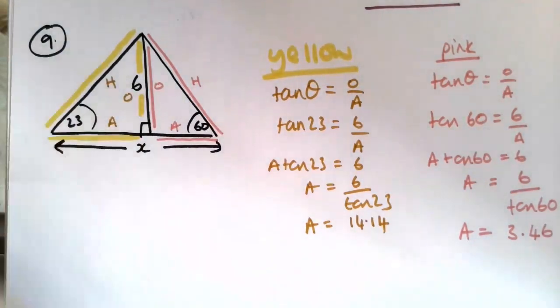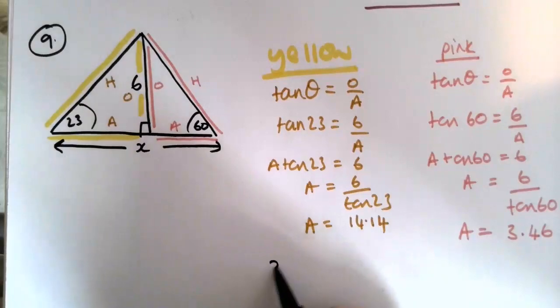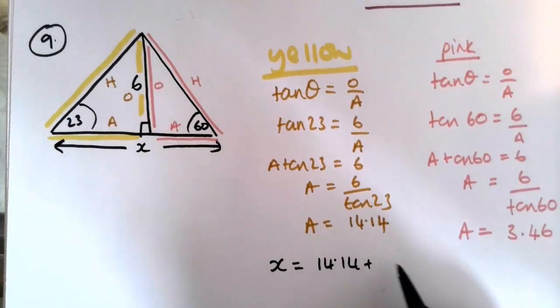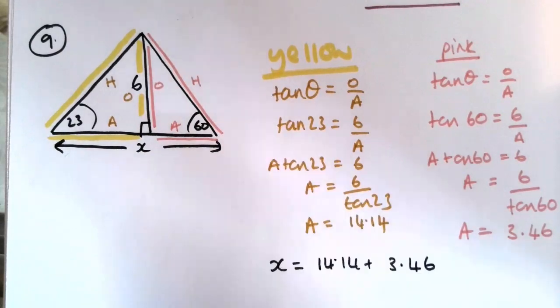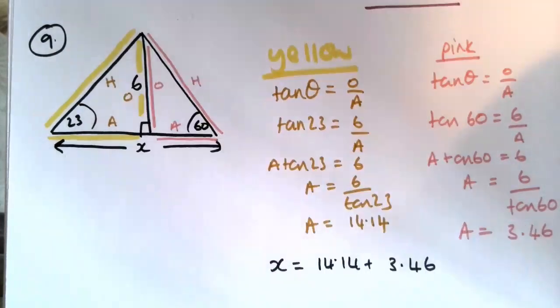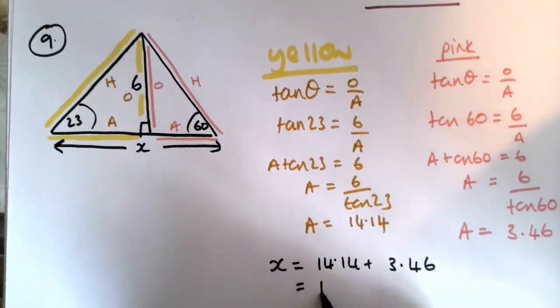So the total length of x is going to be these two added together: 14.14 plus 3.46 gets 17.6 to 3 significant figures.